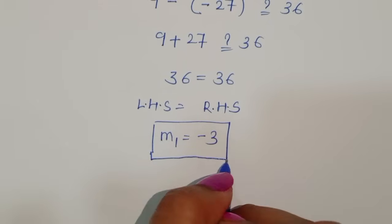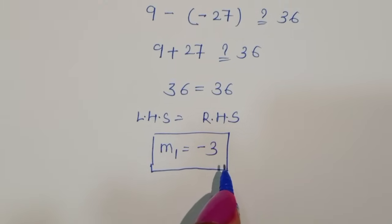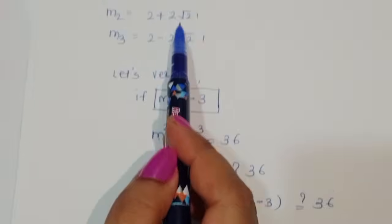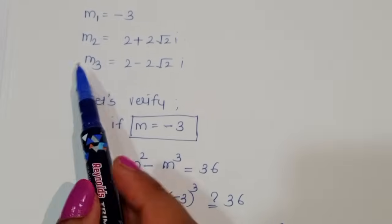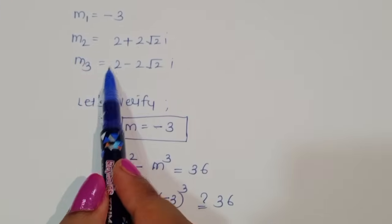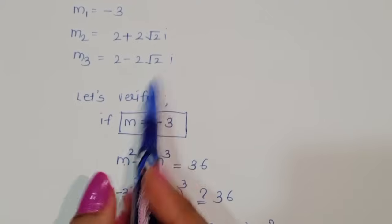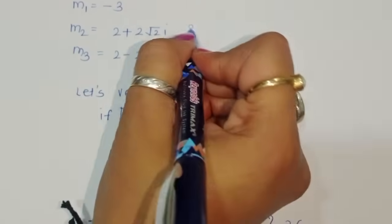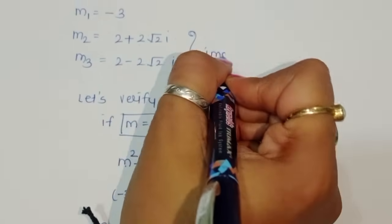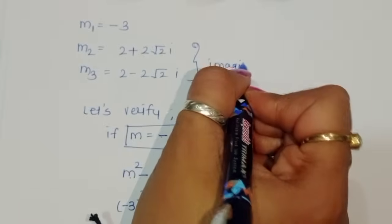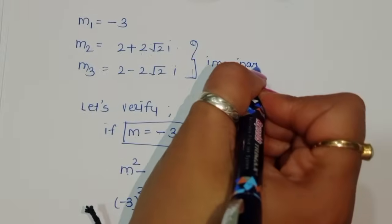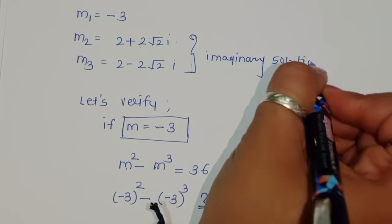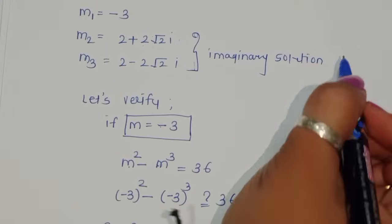In summary: m2 equals 2 plus 2 root 2 i and m3 equals 2 minus 2 root 2 i are both imaginary solutions for this equation. Thank you.